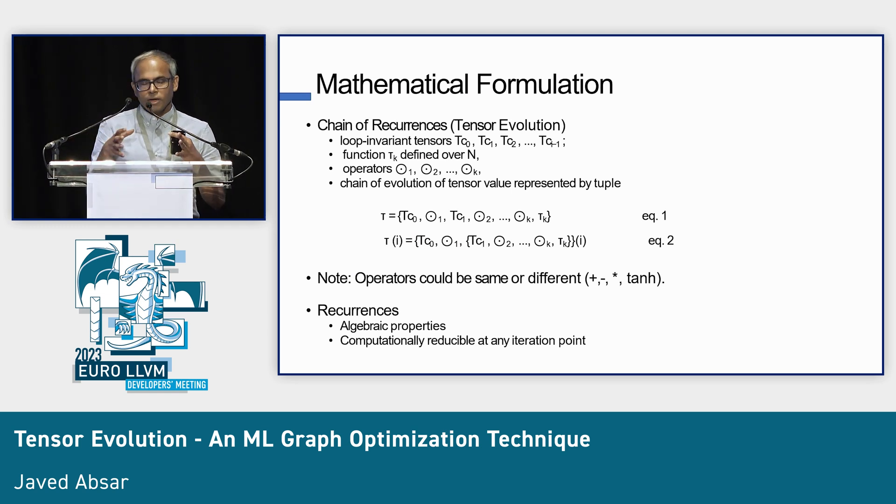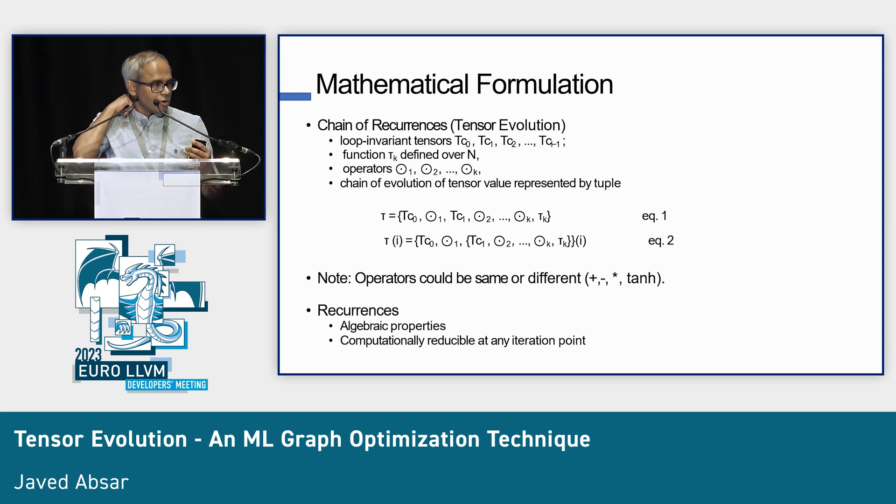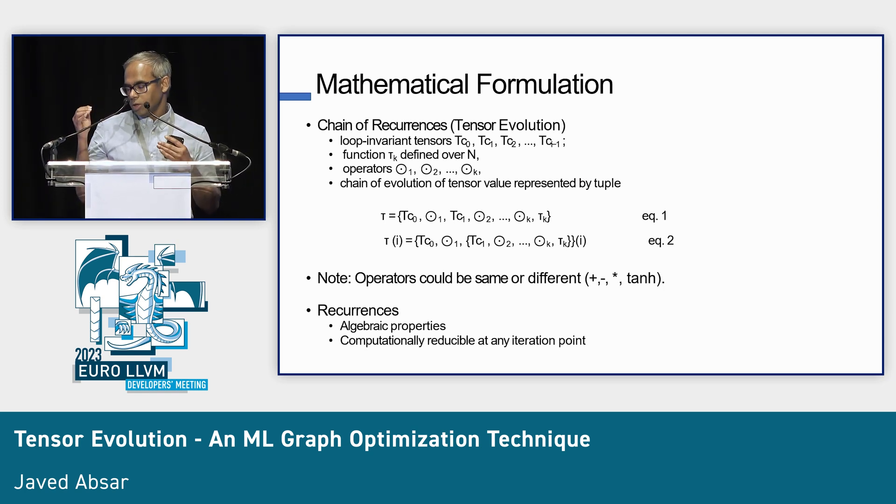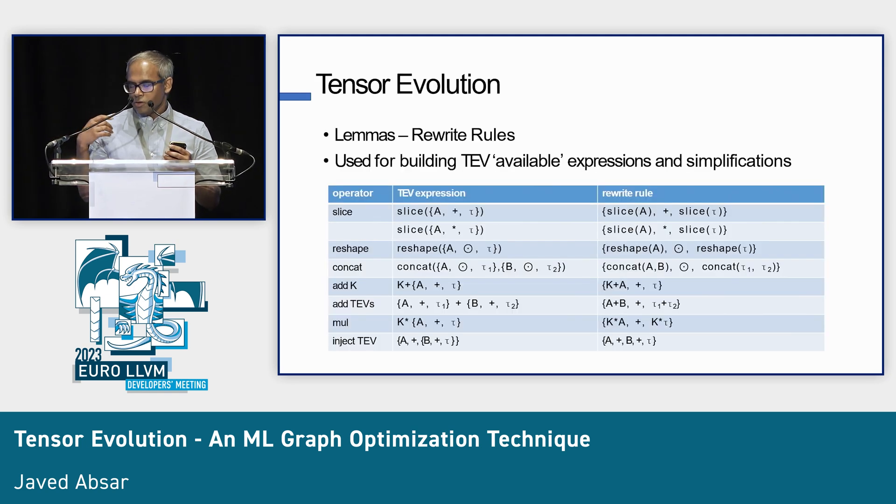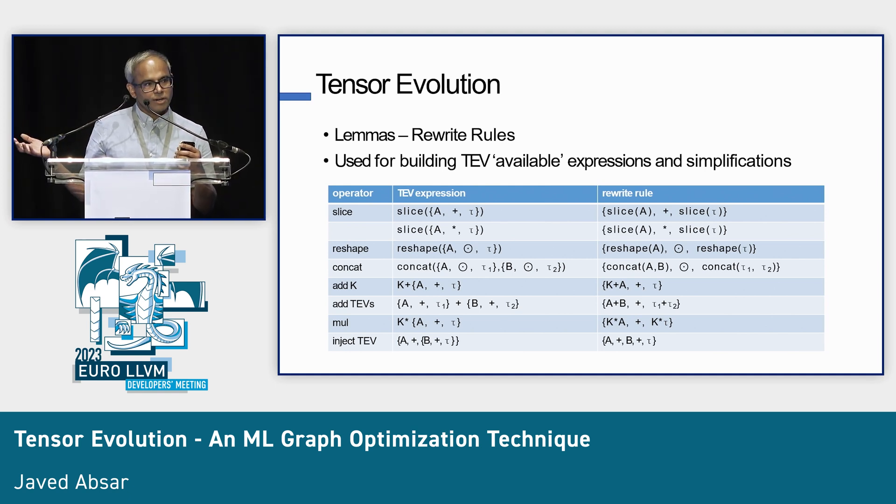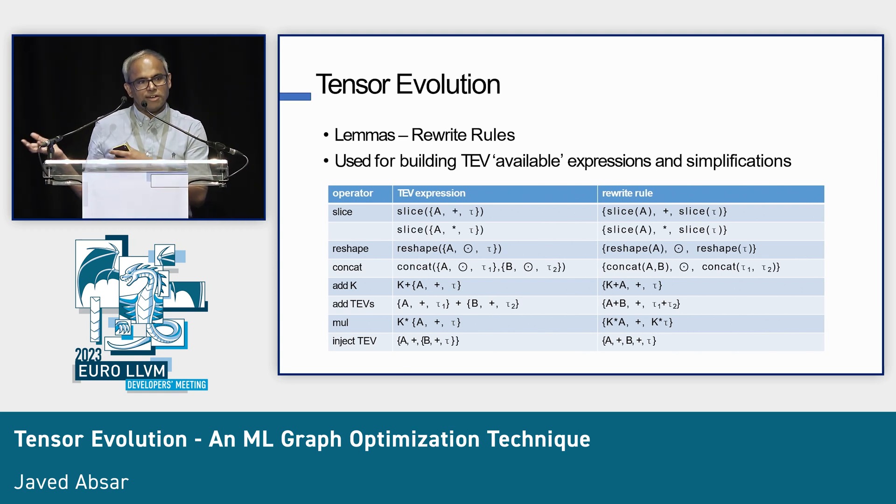Then you have what's called a chain of recurrences. The whole point of this is there is a strong mathematical background on these things. There were papers written like 30 years ago on chains of recurrences, and they have a mathematical model, and it's reducible in the sense, if you've got a loop that runs a million times, you don't need to run it a million times to know what the value would be at any point. You can compute it. You can compute it using high school algebra kind of thing, rewrite rules. If you know A plus B whole square is A squared plus 2AB, in the same way, you have these rewrite rules that you can use, and you can build the tensor evolution expressions on top of it, much like how SCEV does it. SCEV calls it available expressions. We call it TEV available expressions.